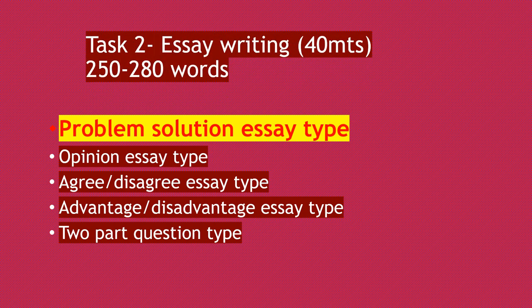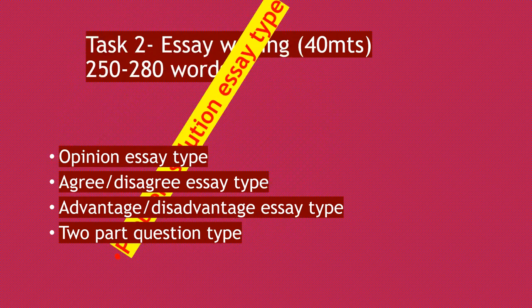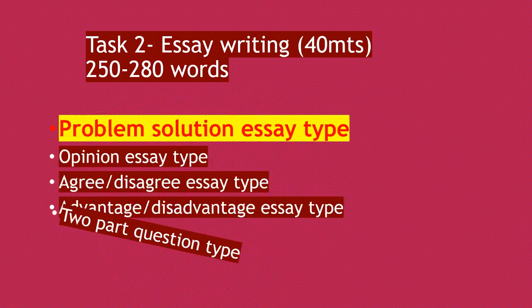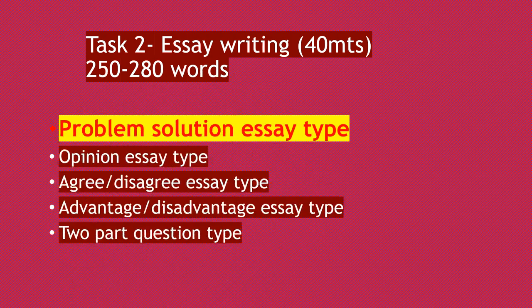Let's take a look at Task 2 essay writing. 40 minutes you should be spending and you need to write 250 to 280 words. Always remember that the moment you read the question, you should be able to identify the essay type. There are five different essay types: problem-solution, opinion, agree/disagree, advantage/disadvantage, and two-part question. In this video, I'm going to discuss the problem-solution essay type.